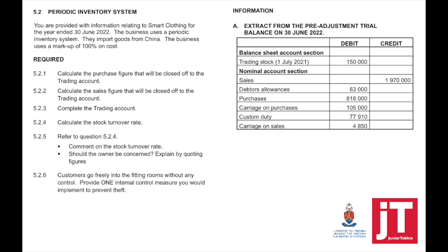5.2: the periodic inventory system. You are provided with information relating to Smart Clothing for the year ended 30 June 2022. The business uses the periodic inventory system. They import goods from China. The business uses a markup percentage of 100% on cost.